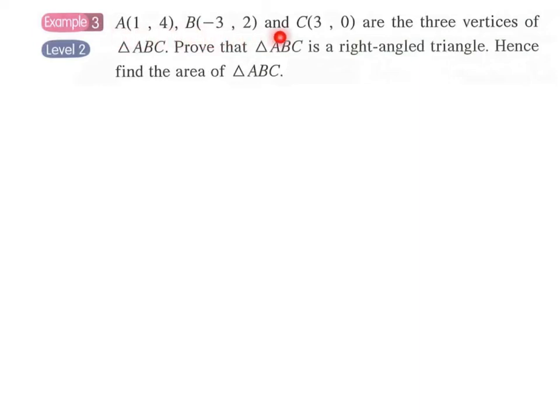Example 3. Points A, B, C are the three vertices of a triangle. Prove that triangle ABC is a right angle triangle and hence find the area. Actually, this is quite similar to example 2, and again we have to draw the diagram by ourselves first.